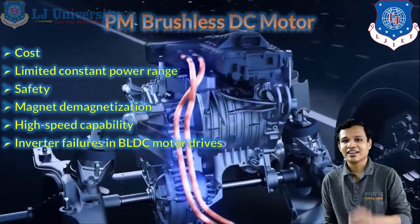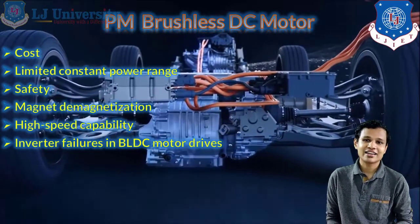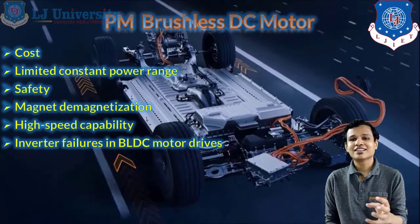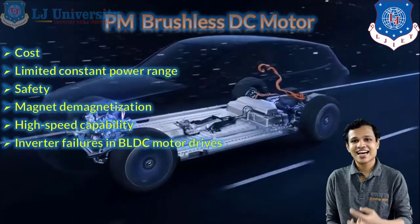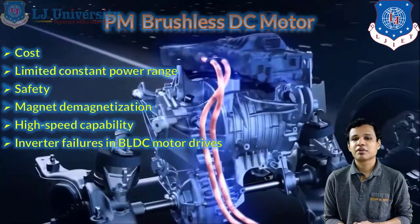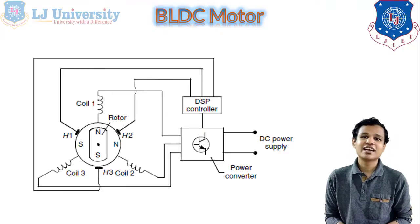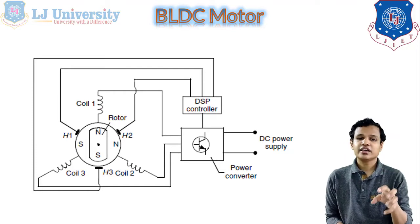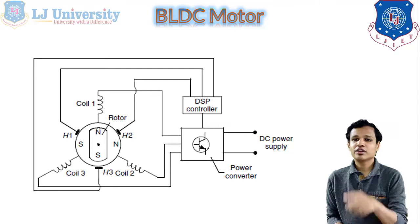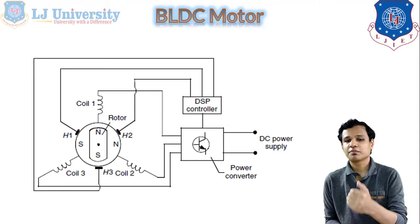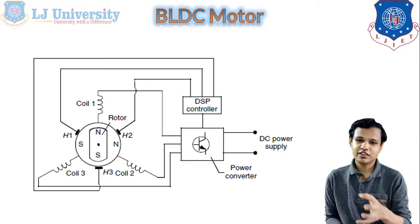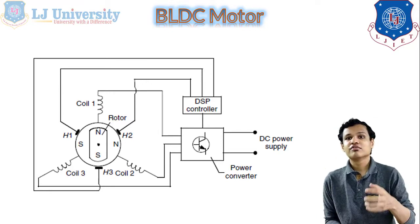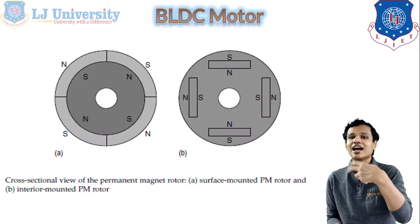Inverter failure in the brushless DC motor is higher — there are greater chances of the inverter failing, especially during regenerative charging when power flows in the backward direction. Looking at the basic circuit for the BLDC motor, we can see a rotor with N and S poles, and around that permanent magnet the stator is arranged. Three different coils are connected, and a DSP controller is attached with the BLDC motor.